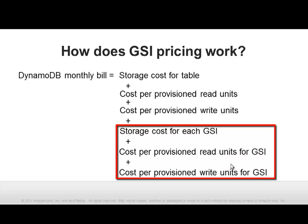When your application reads from the GSI, read capacity units are consumed. Read capacity units for GSIs cost the same as those for the underlying table. Updating the GSI consumes write capacity units. The more frequently attributes in the GSI change, the more write capacity units you must provision. On the other hand, if a change to the underlying table requires no changes to the GSI, it consumes no write capacity units for the GSI. Write capacity units for GSIs cost the same as those for the underlying table as well.